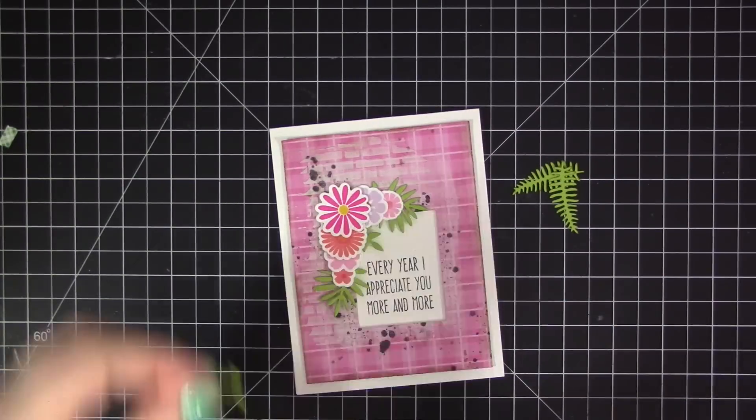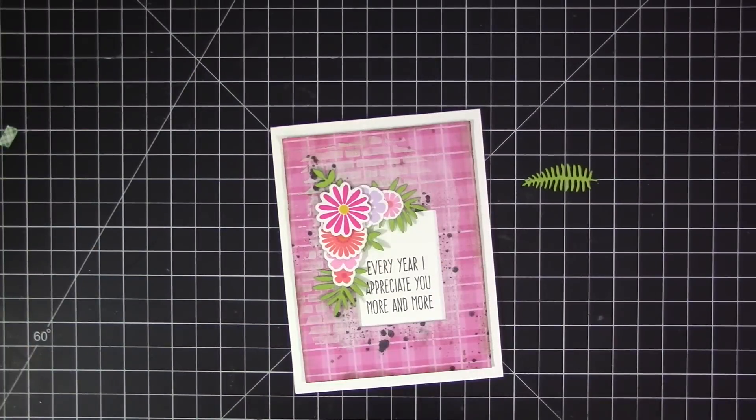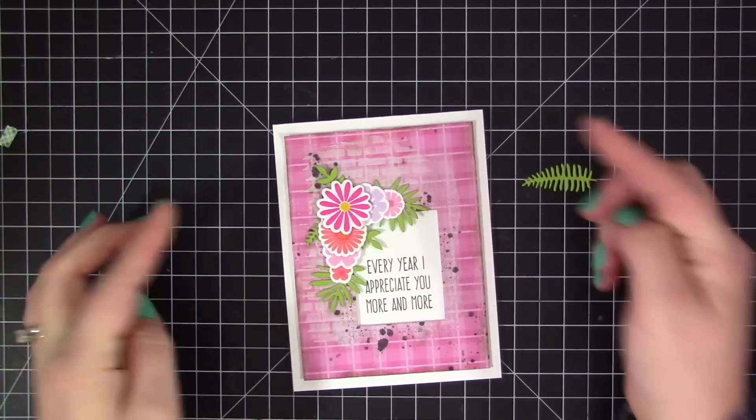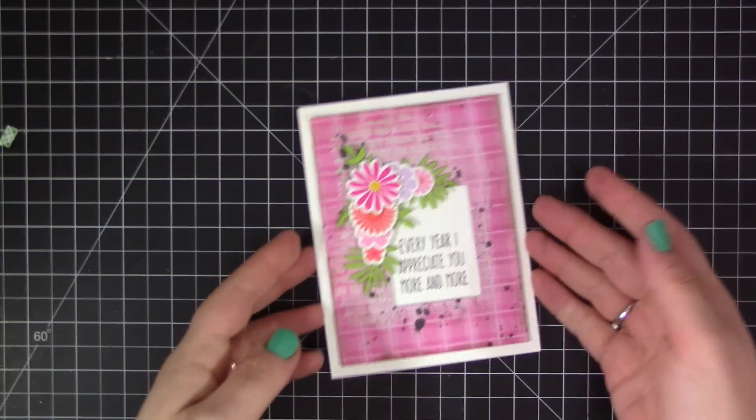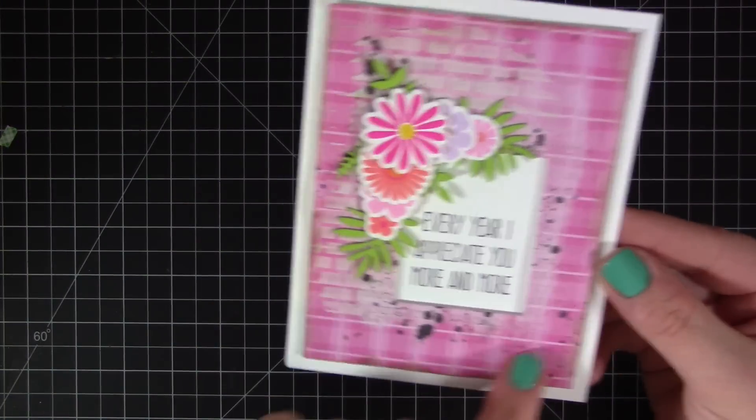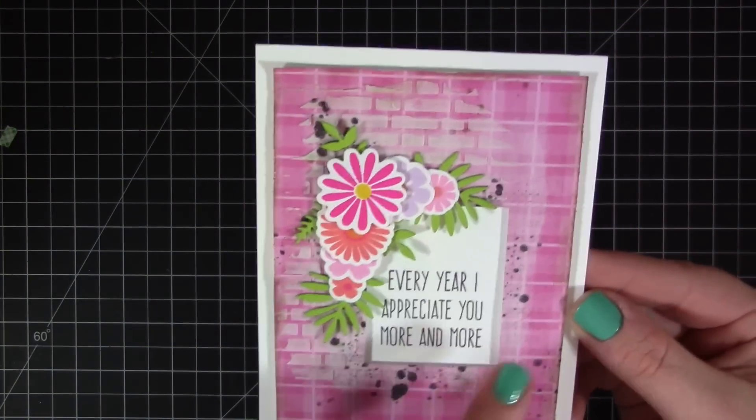I just went ahead and adhered those with glue dots around that frame piece and concentrated the design on the top left corner there, so that it framed the sentiment that we've stamped on the inside. Once I have that done, that's going to complete this card design. You can see I added some great distress detail by doing the brick pattern with embossing paste, the stamping with the distress patterns, the gesso underneath with the text stamping on top, and then the detail around the edges.